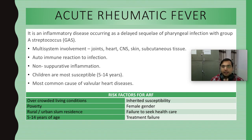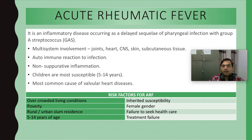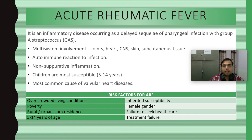Acute rheumatic fever is a misnomer — not only fever but there are other manifestations apart from fever, and sometimes even fever cannot be seen. Acute rheumatic fever is an inflammatory disease which occurs as a sequelae of pharyngeal infection. After approximately three weeks of pharyngeal infection, the child suffers with acute rheumatic fever — it is a delayed sequelae of pharyngeal infection with Group A Streptococcus.